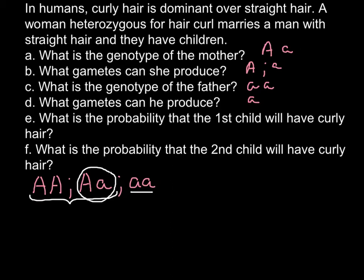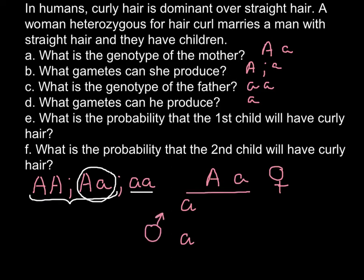Question E: What is the probability that the first child will have curly hair? In order to solve this problem, we have to build a Punnett square. On one side we put the mother, who is heterozygous for this trait, and on the other side we put the father's genotype.